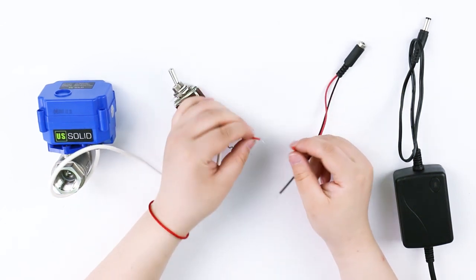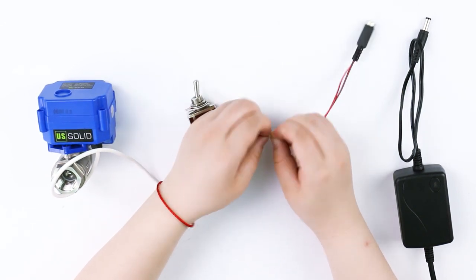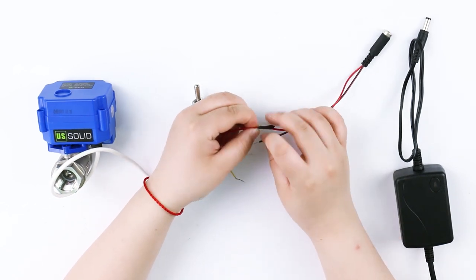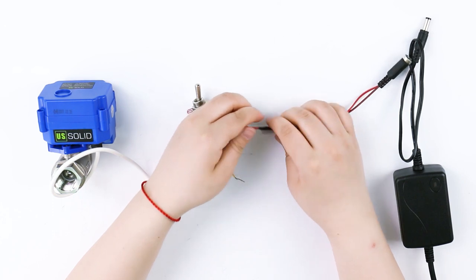Red wire in the middle of the switch is connected to the positive pole and the yellow wire is connected to the negative pole of the DC plug.